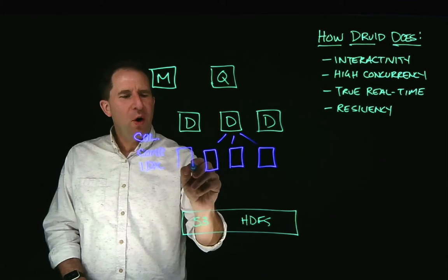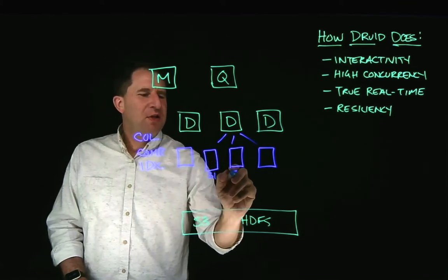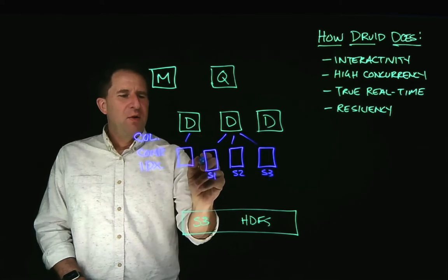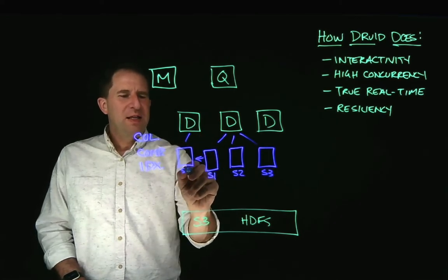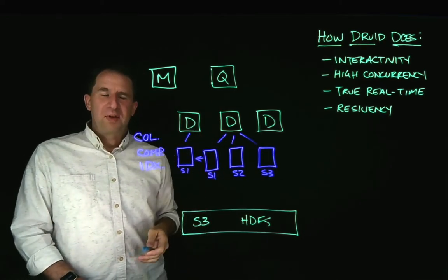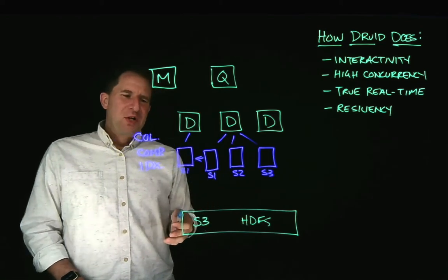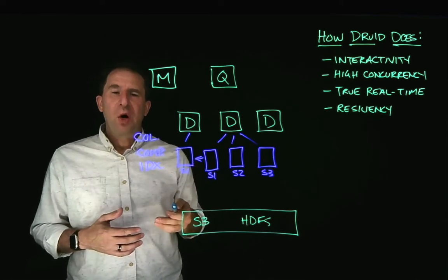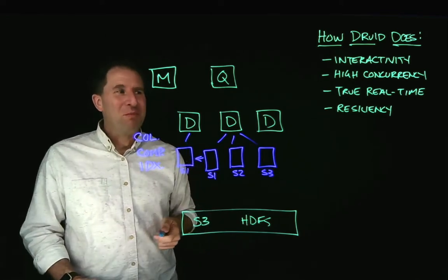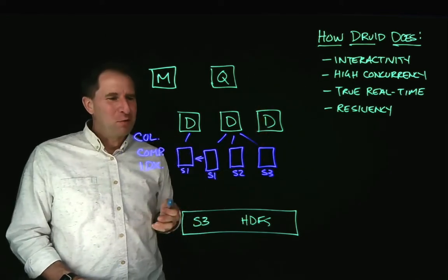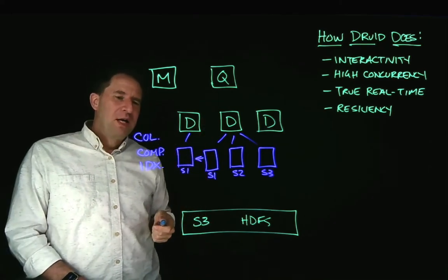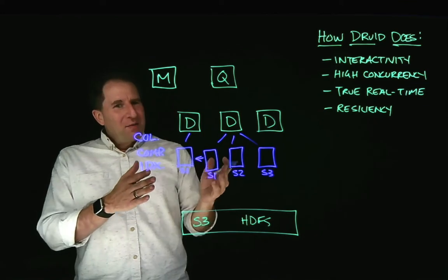Segments are also automatically replicated. So let's say we have these three segments here, and these segments will be replicated at least once to a different node, if that's what you've got. This is done obviously for fault tolerance purposes. So in case we lose a segment, it's available on another node. But it can also be used to improve the interactivity and the query performance as well.